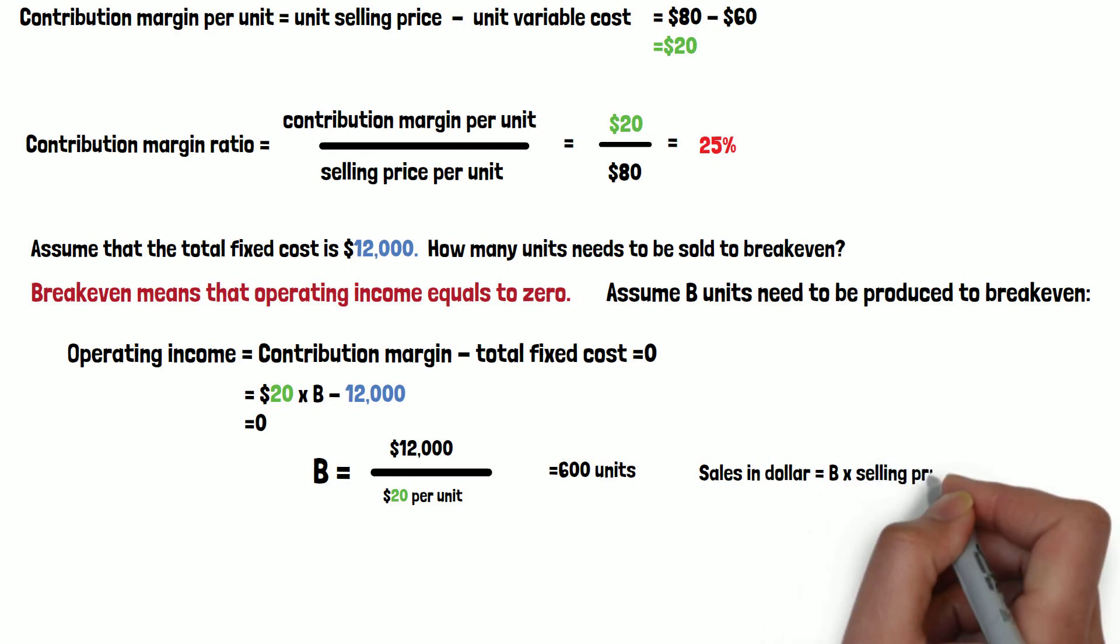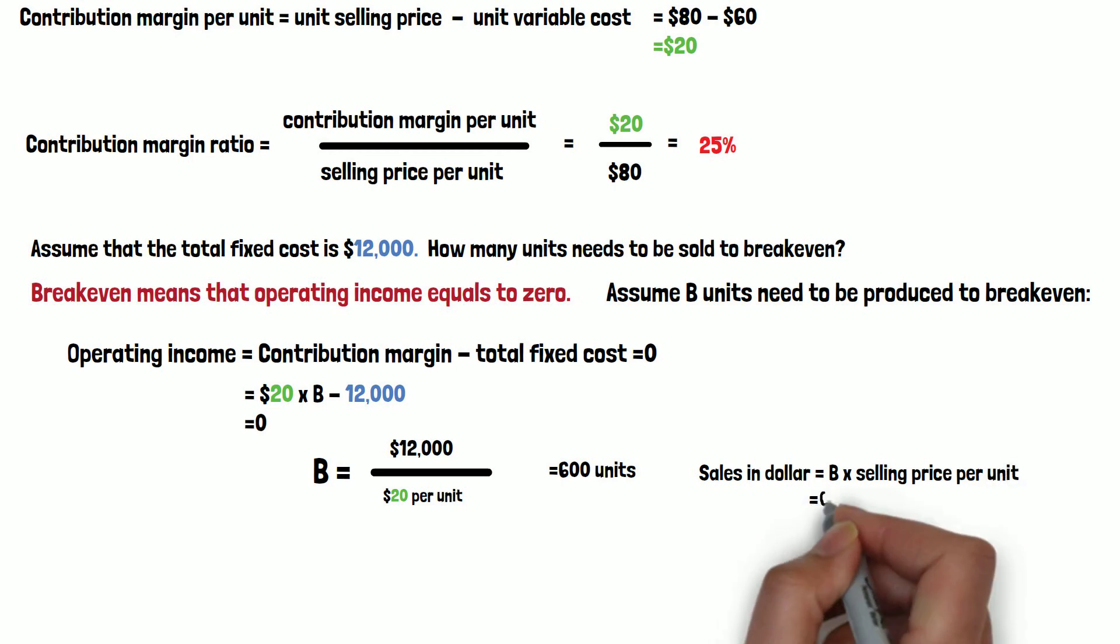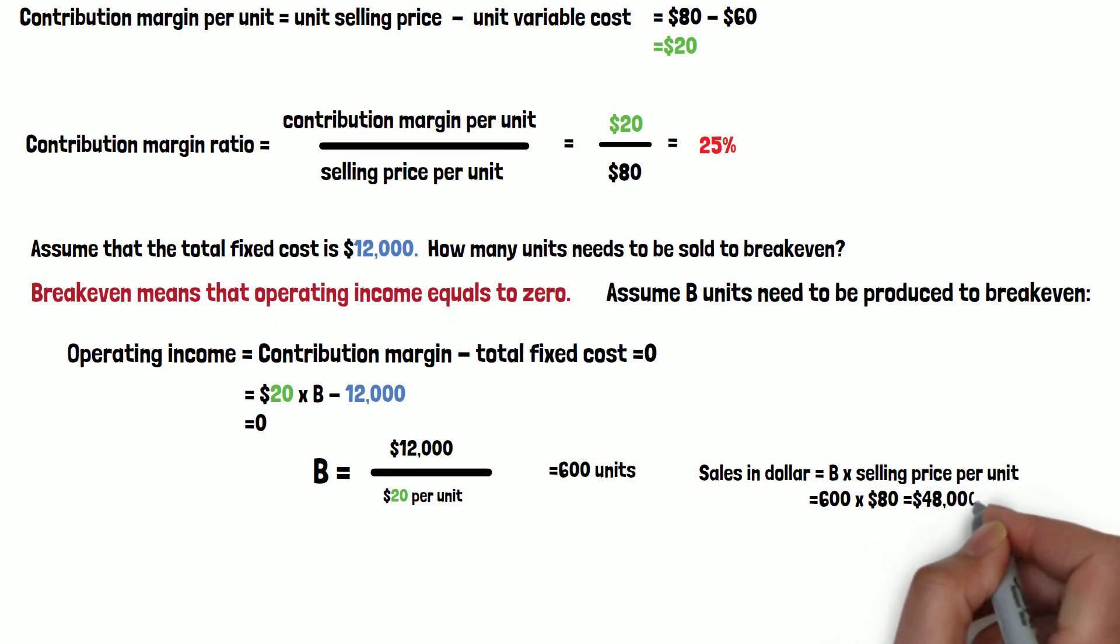The dollars of sales to break-even, that's using the B times the selling price per unit. So 600 units, each unit's selling price is $80. So in total, you need to sell $48,000 to break-even.